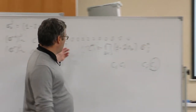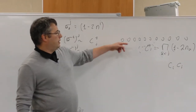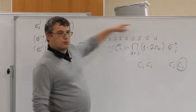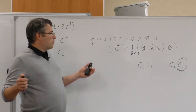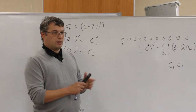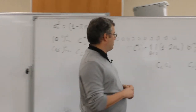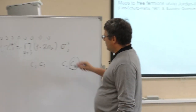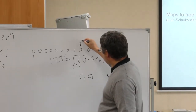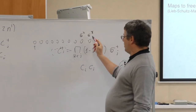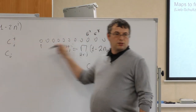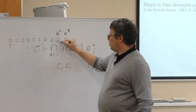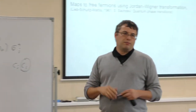The Jordan-Wigner transformation is useful only in one dimension because in two dimensions you have to use a snake-like ordering, making everything extremely non-local. In 1D we keep locality because if you look at this Hamiltonian with sigma_x on adjacent sites, the strings cancel each other. So we only have to worry about one side, and now it's really a matter of algebra.